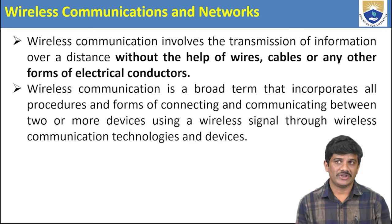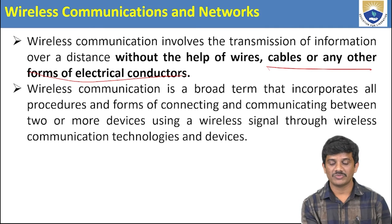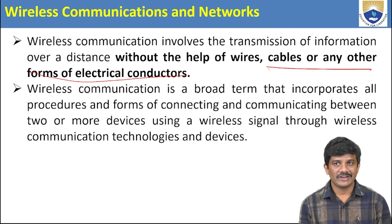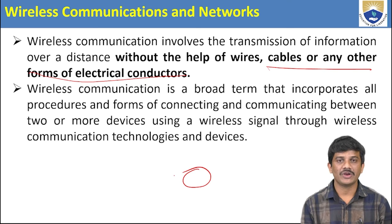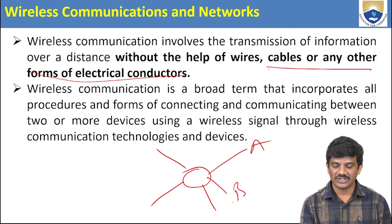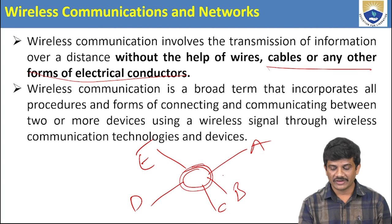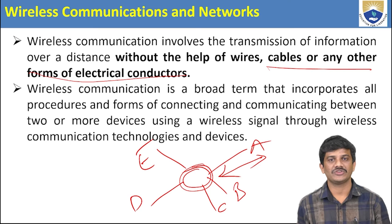Wireless communication involves transmitting data from one place to another without the help of wires, cables, or any other form of electrical conductor. Wireless communication is a broad term that incorporates all procedures and signals through wireless communication technologies and devices. We need a device and a node for establishing the connection; from the node we connect all devices — A, B, C, D, E — and transfer information from node to device and device to node.